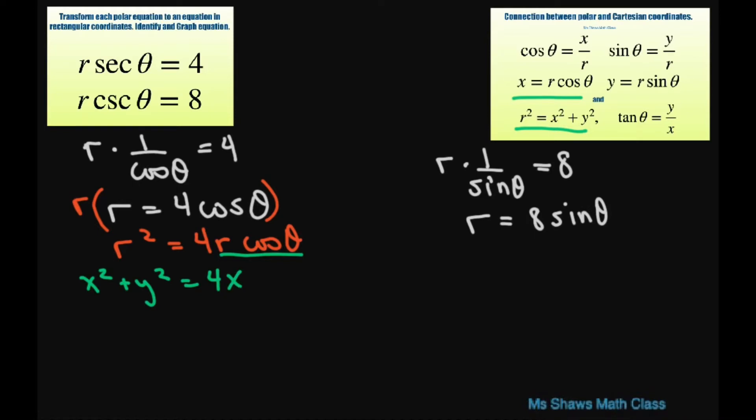Now let's group our x's together and subtract 4x from both sides, and also complete the square for a perfect square trinomial. So you take half of 4 and square it—that gives you 4. Then we have plus y squared. Since we added 4 to the left hand side, we also have to add it to the right hand side.